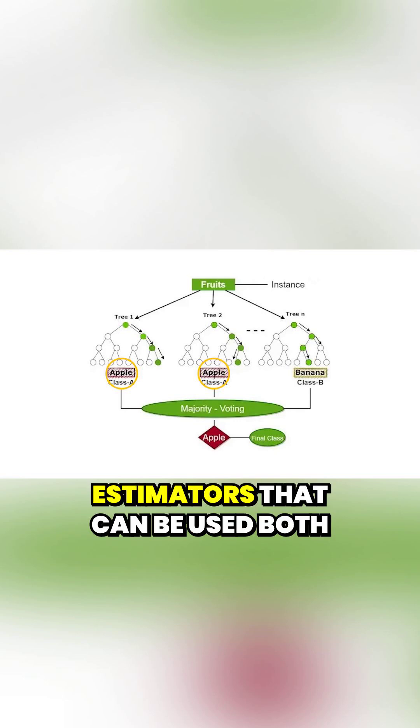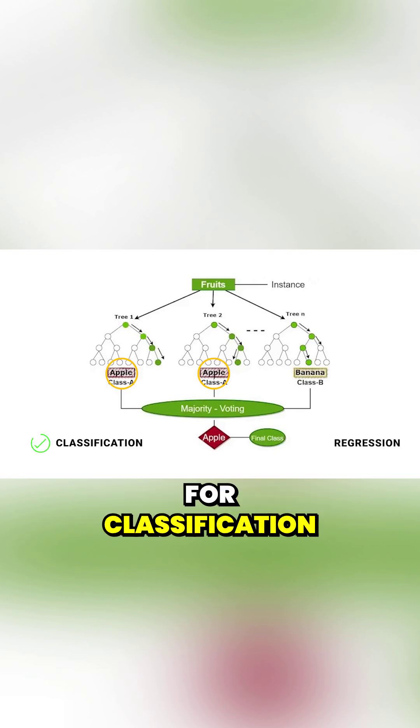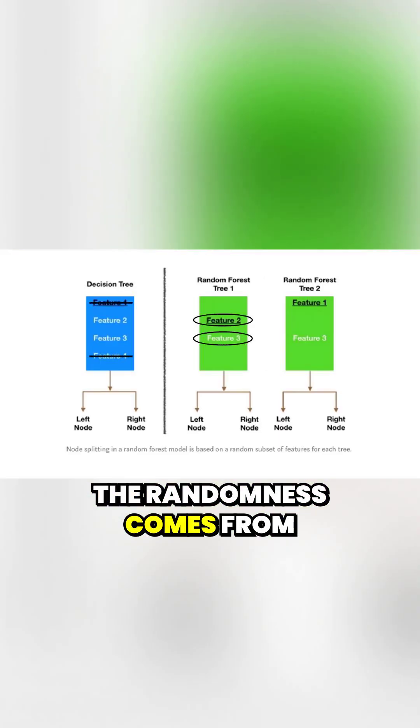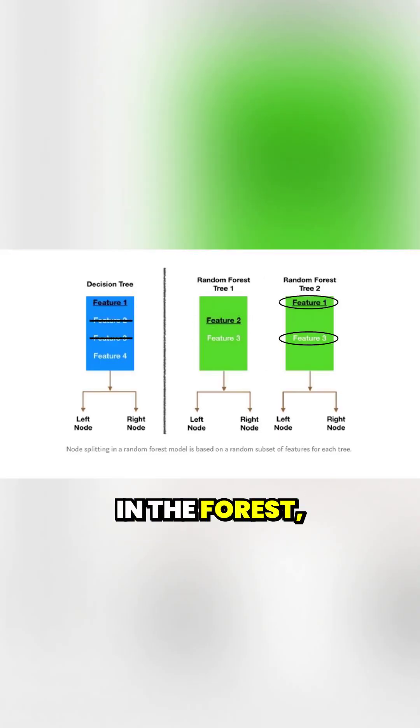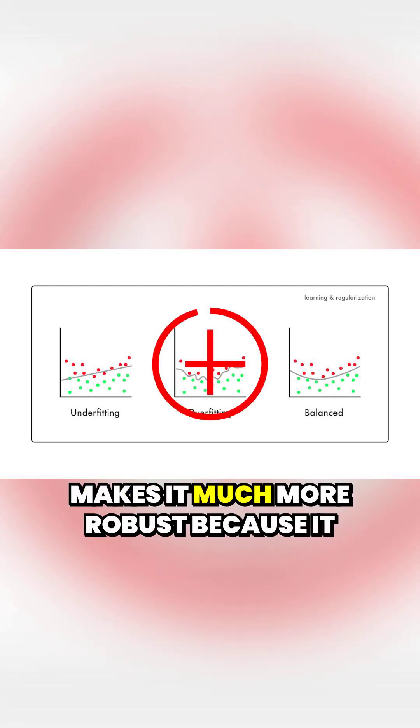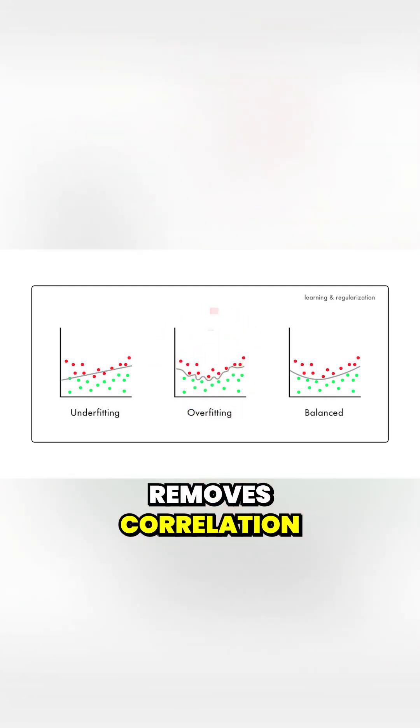Random forests are very powerful estimators that can be used both for classification and regression. The randomness comes from randomly excluding features for different trees in the forest, which prevents overfitting and makes it much more robust because it removes correlation between the trees.